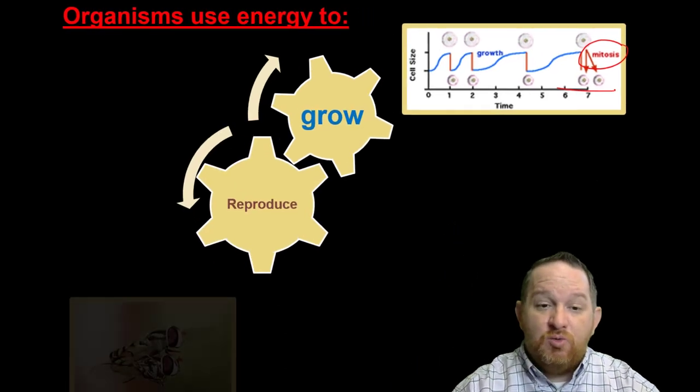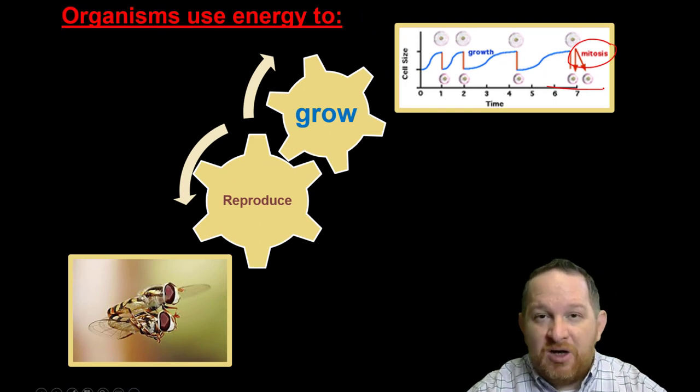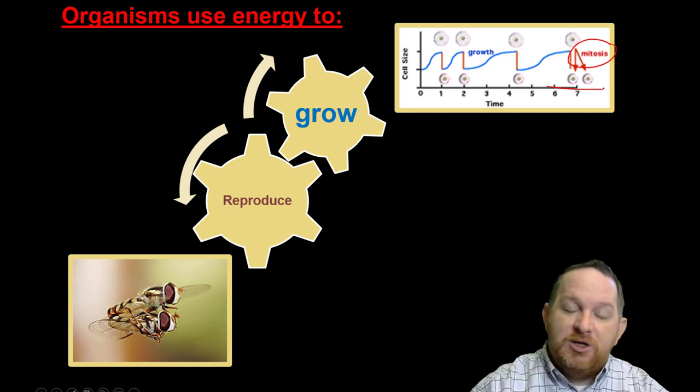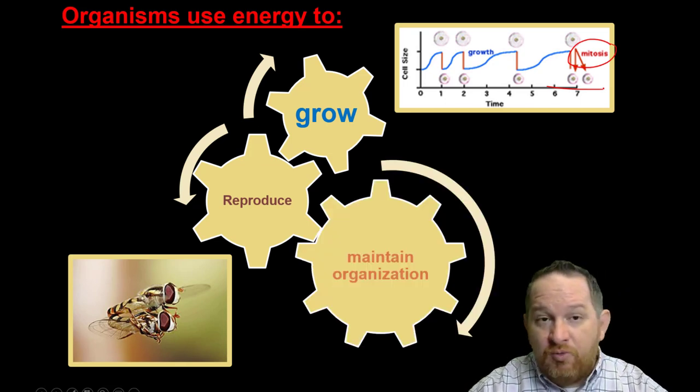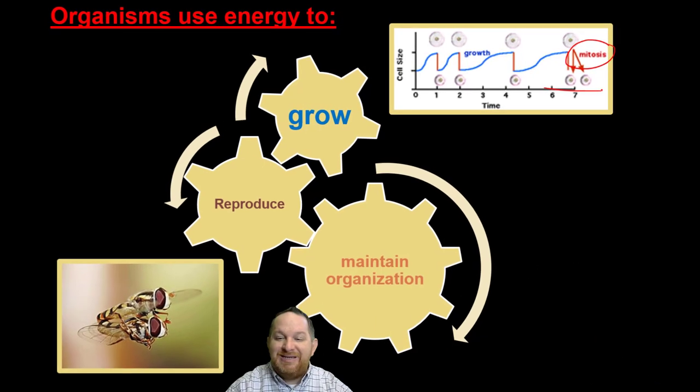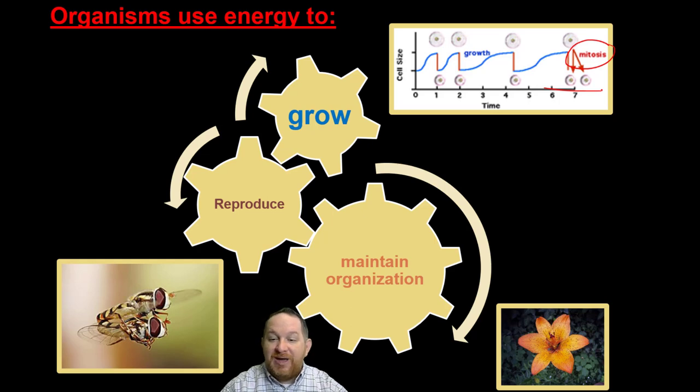We also need energy to reproduce. If we're not passing on our genes to the next generation through reproduction, our species would die out. Another really big part of energy use is that we need to maintain organization and homeostasis. These things and a few more require a lot of energy for organisms.